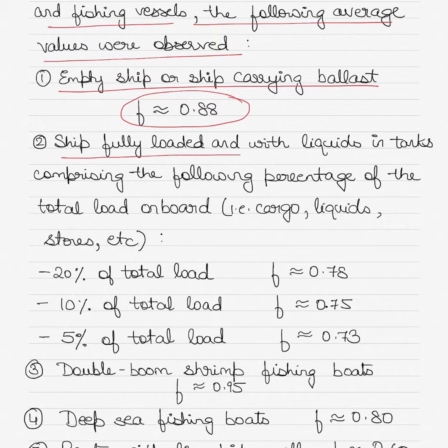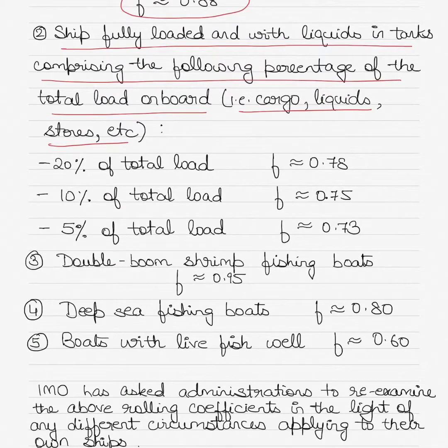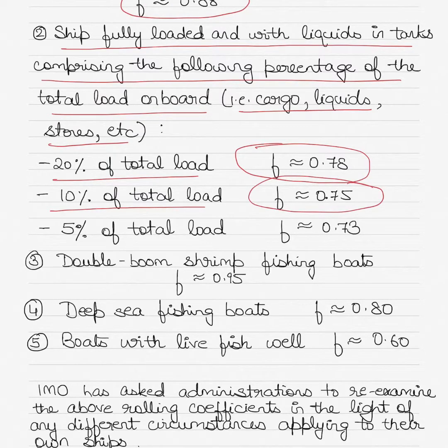For a ship fully loaded and with liquids in tanks comprising the following percentage of the total load on board including cargo, liquids, stores etc. If the ship was carrying 20% of the total load the factor was considered to be close to 0.78. If carrying 10% of the total load the factor was close to 0.75. 5% of the total load 0.73.